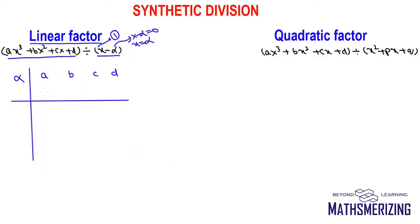We will always put 0 beneath the leading coefficient. So right below a I will put 0 and then add them up, giving a.